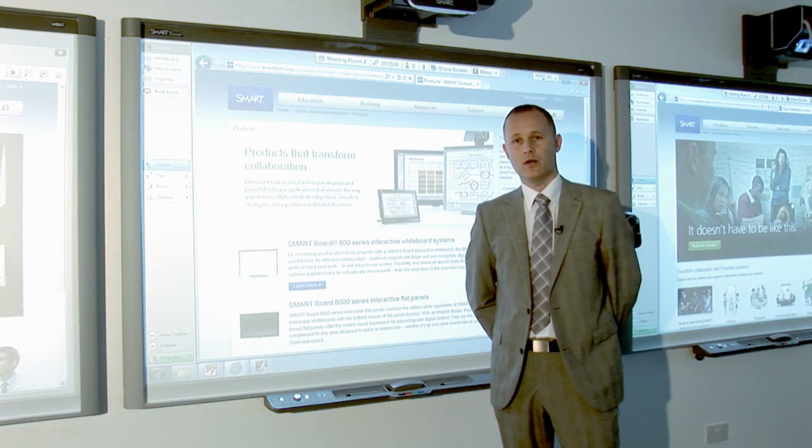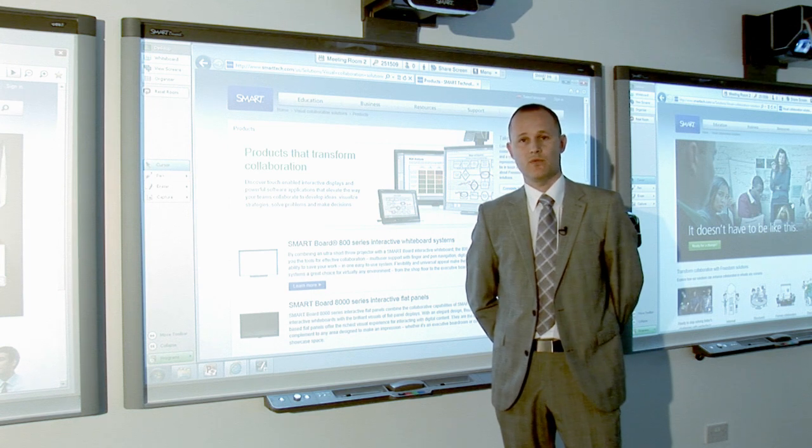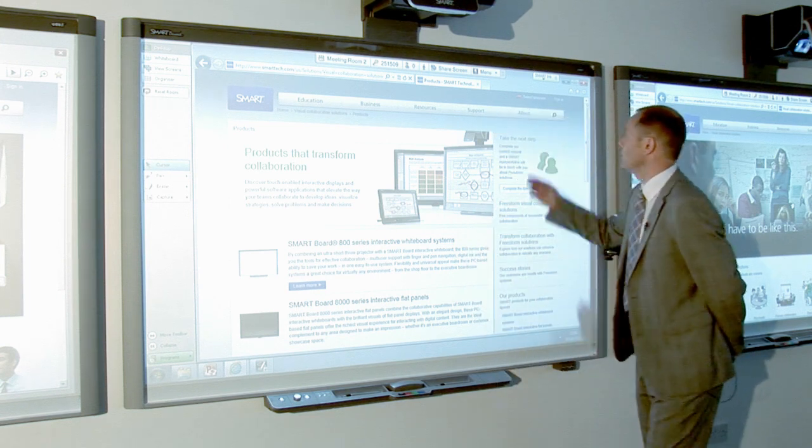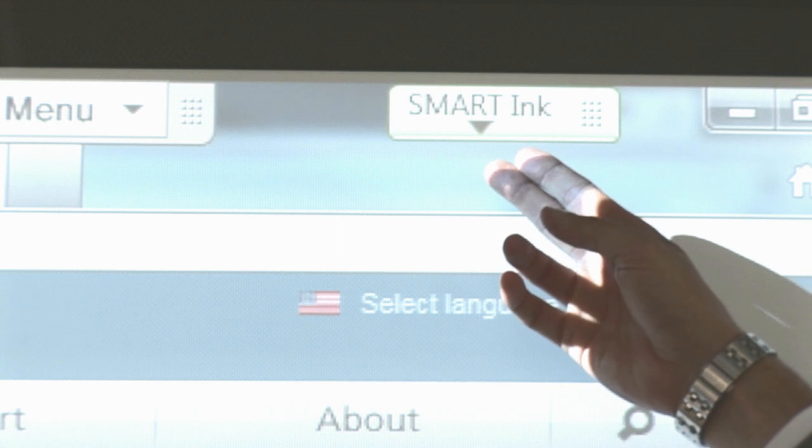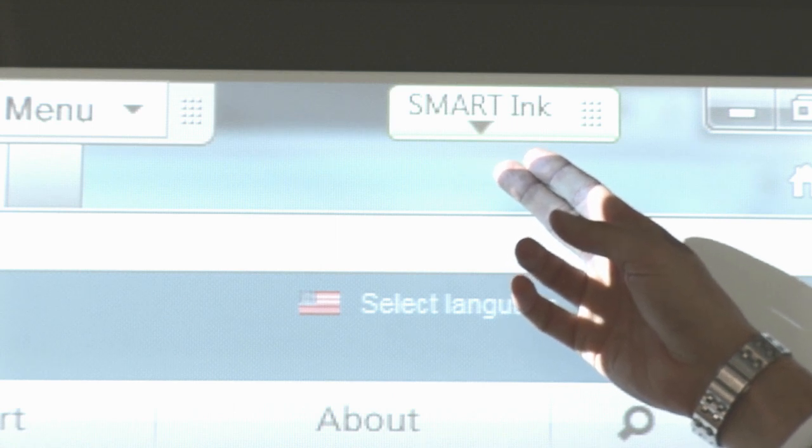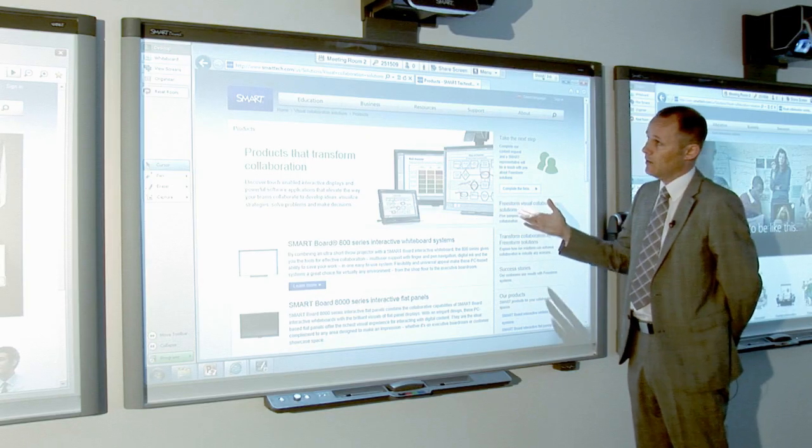I'm going to take a look at the Smart Ink Toolbar within Smart Meeting Pro software. If we look in the top corner here, you can see the Smart Ink Toolbar. This will automatically activate when you go into any program, such as we're looking now at a web page.